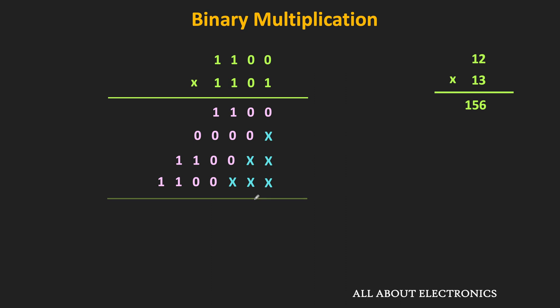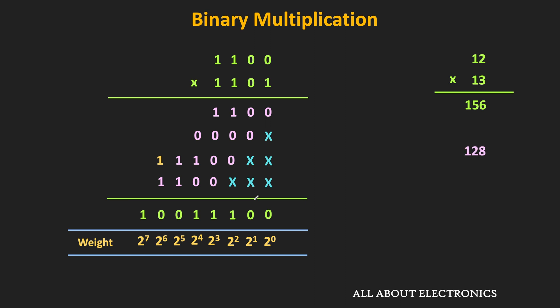The next step is the addition of all these products. We will do column by column addition. In the rightmost column, we will have 0. In the next column, the result will also be equal to 0. Then in the next column, the result will be equal to 1. And in the next two columns also, the result will be equal to 1. Then this 1+1 = 0, and 1 will be the carry. Once again, 1+1+1 = 1 with a carry of 1, and then 1+1 = 10. Converting this result to decimal: 128+16+8+4 = 156. Therefore, this confirms the result after multiplication.